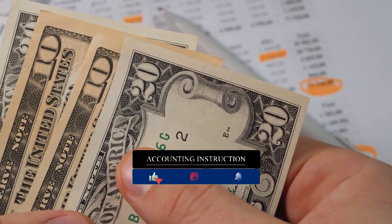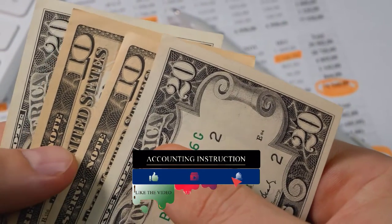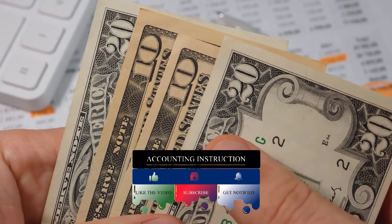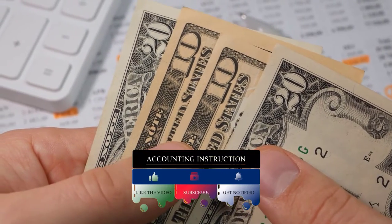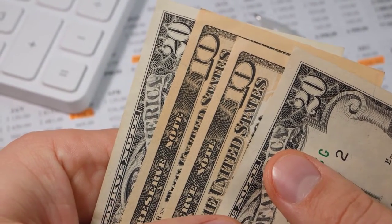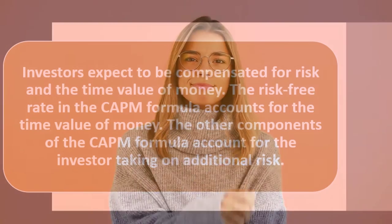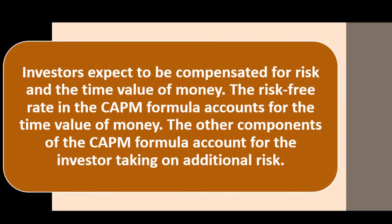We want to generate return in the future and factor in associated risk. These combinations can be more complex than you'd think when determining the best investment for a particular situation and how it might fit into your overall portfolio. The risk-free rate in the CAPM formula accounts for the time value of money, while the other components account for the investor taking on additional risk.